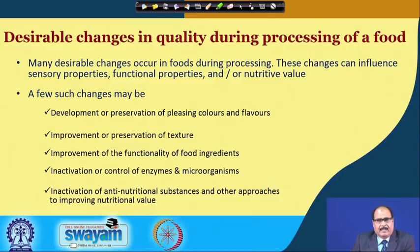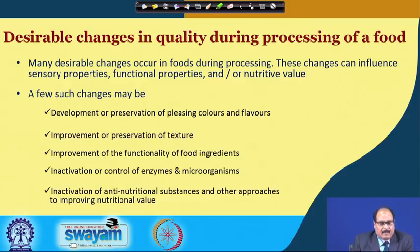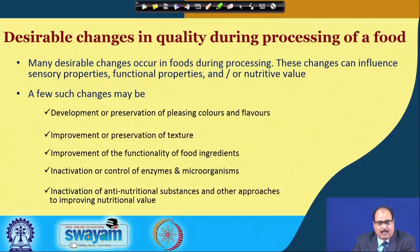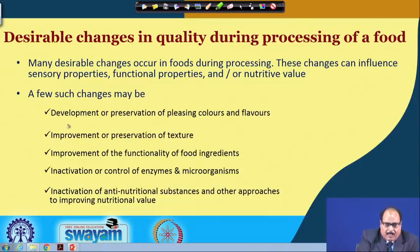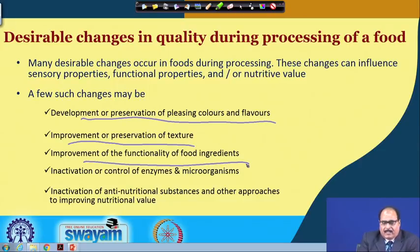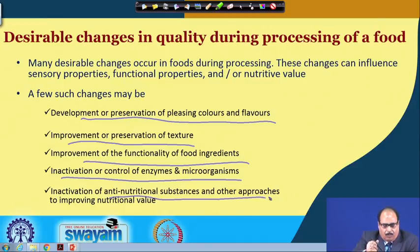Now let us see what are the various desirable changes in quality which generally take place during processing of food. When food is exposed to certain factors during processing, many desirable changes can occur. These changes can influence the sensory properties, functional properties or nutritional value of the food. A few such changes include development or preservation of pleasing colors and flavors, improvement or preservation of texture, improvement of the functionality of food ingredients, inactivation or control of enzymes and microorganisms, or inactivation of anti-nutritional substances or other approaches for improving nutritional value.